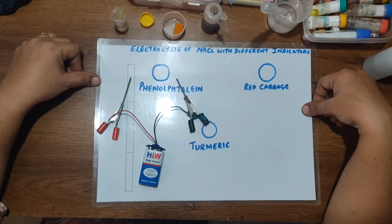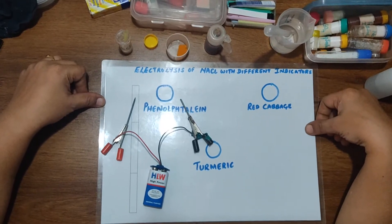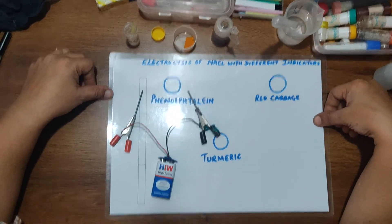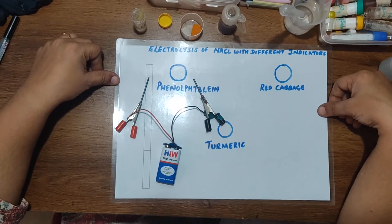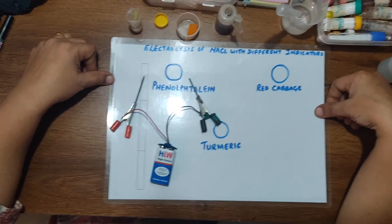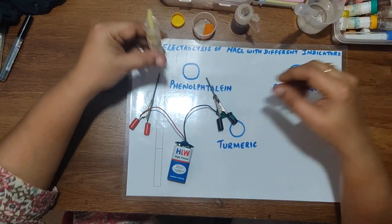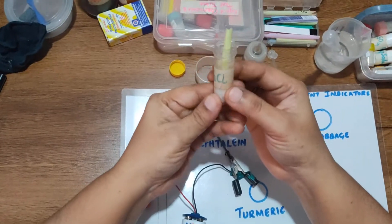Today I'm going to conduct a microscale experiment that is electrolysis of sodium chloride. I've used different indicators here: phenolphthalein, red cabbage which I freshly prepared, and turmeric which is naturally available in the kitchen. The materials required here is sodium chloride or common salt.